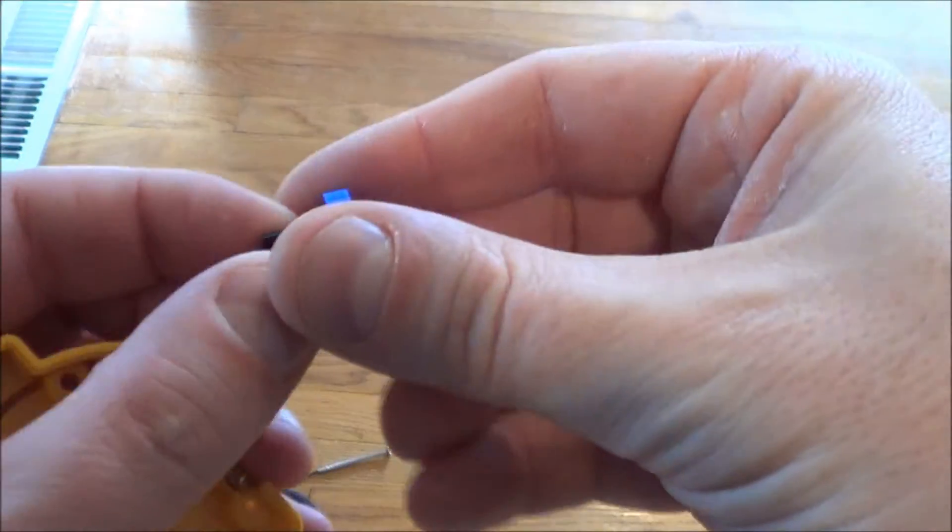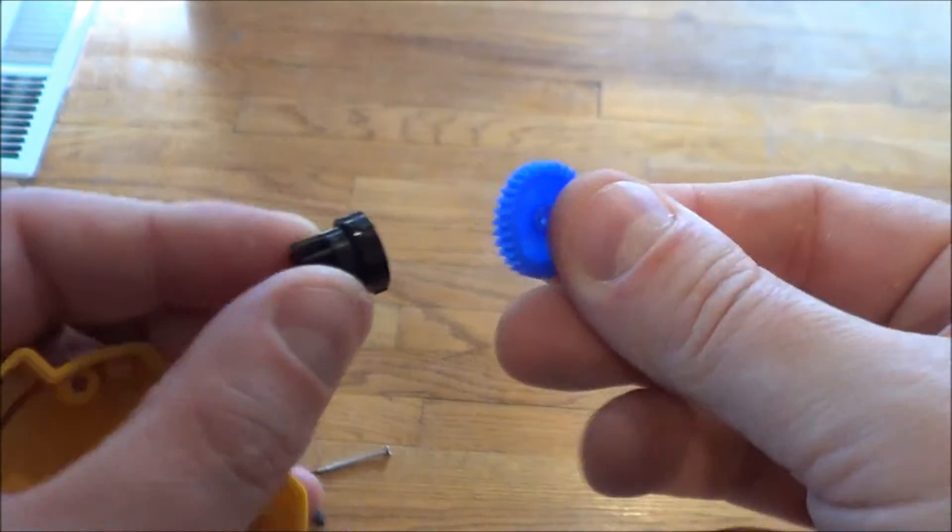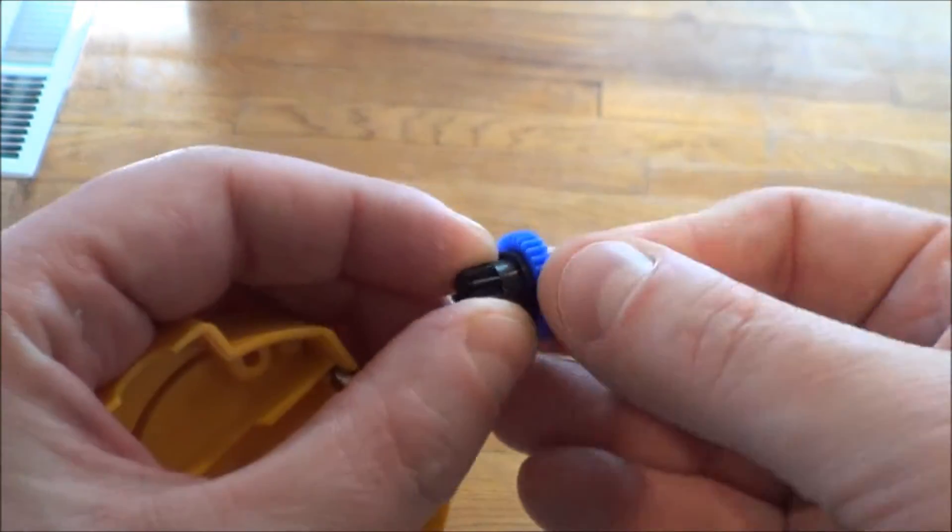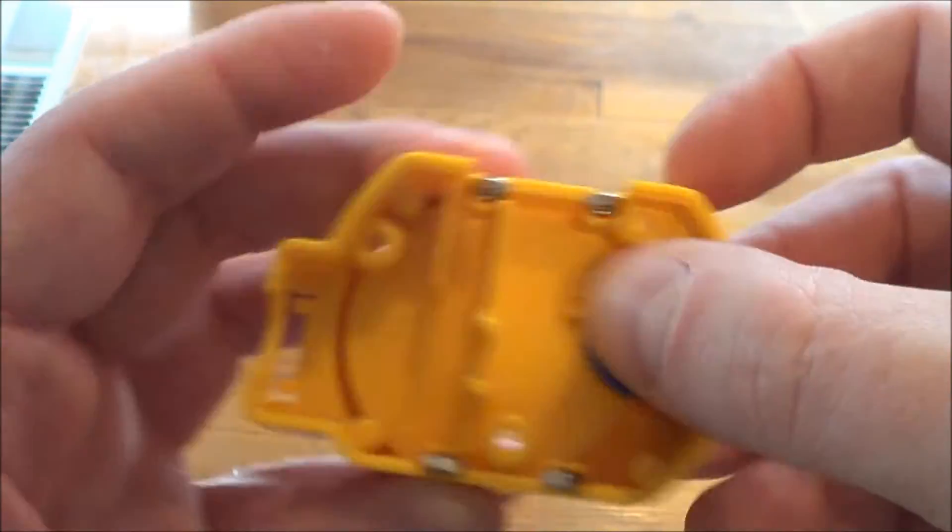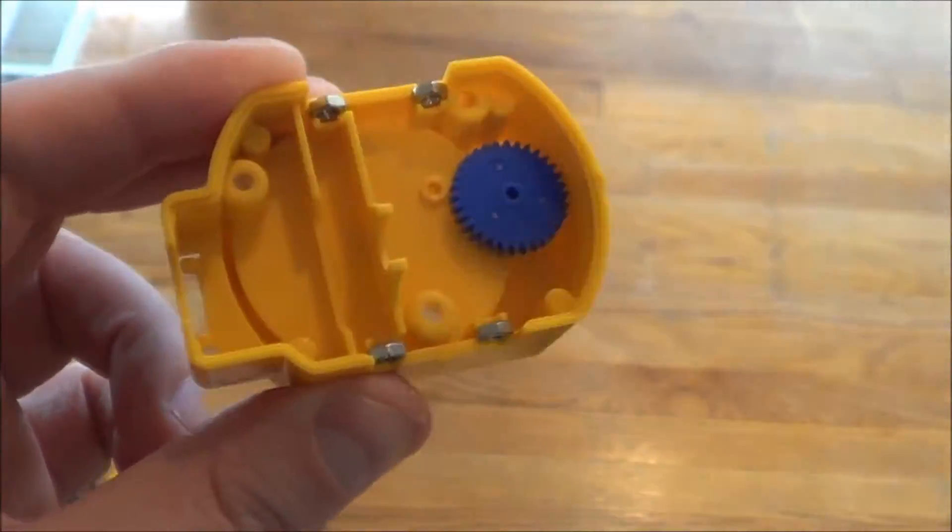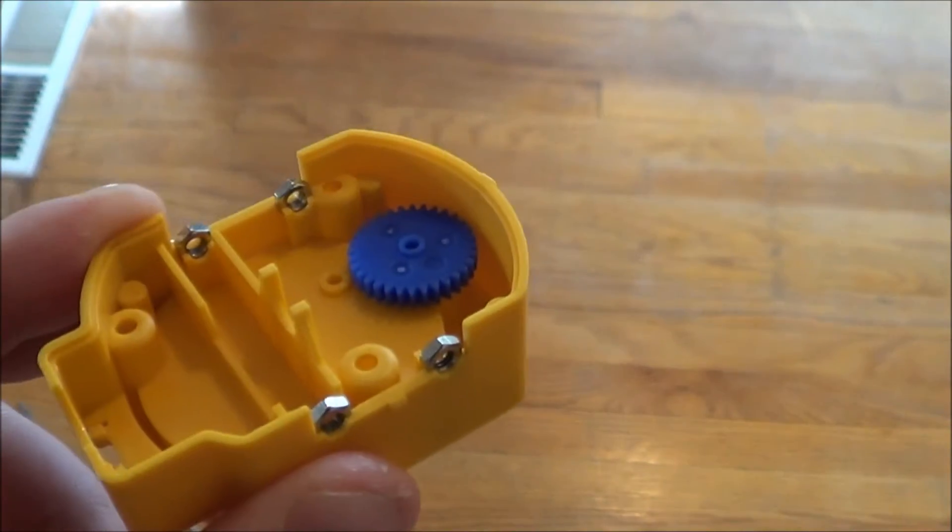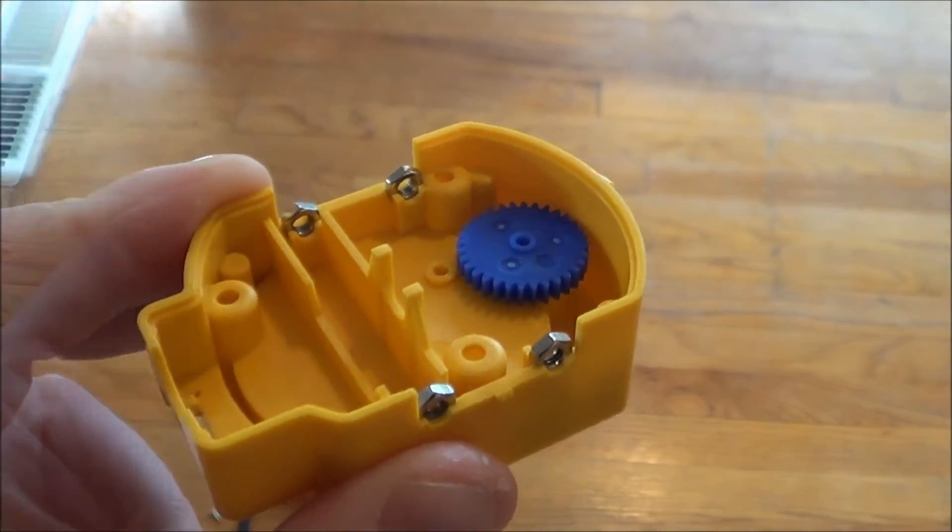The next step: take this blue gear and this black gear, put it into place, then put this into the gearbox like that. You do that four times for four components.